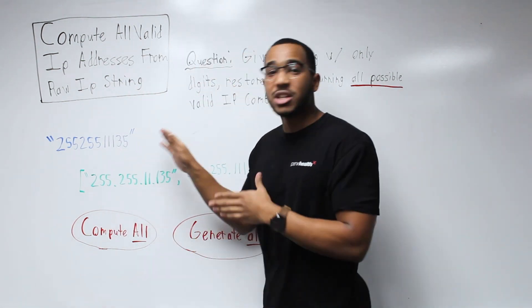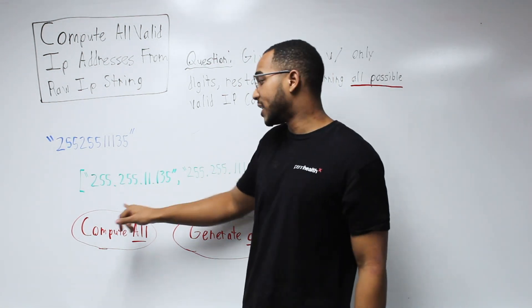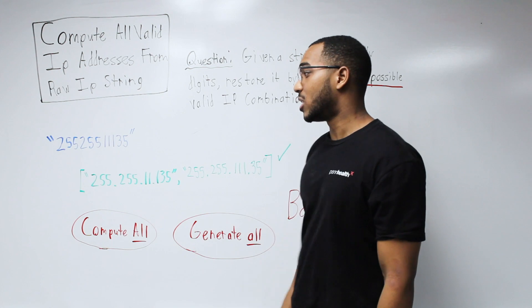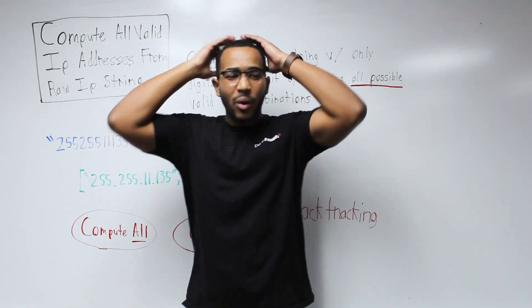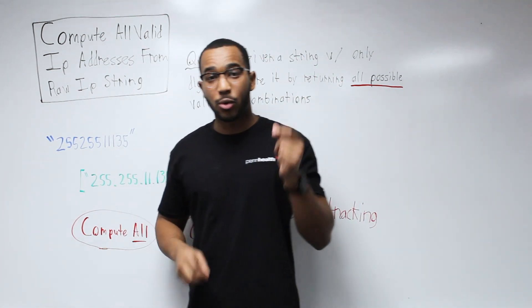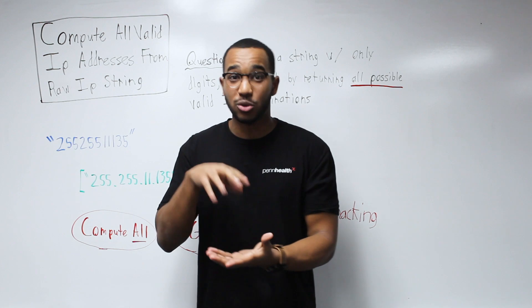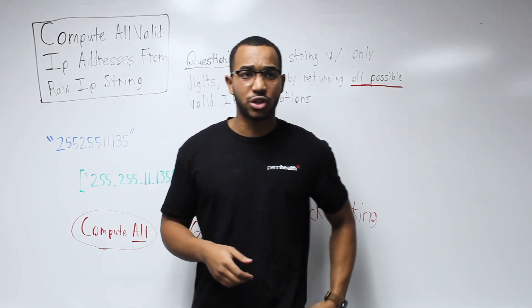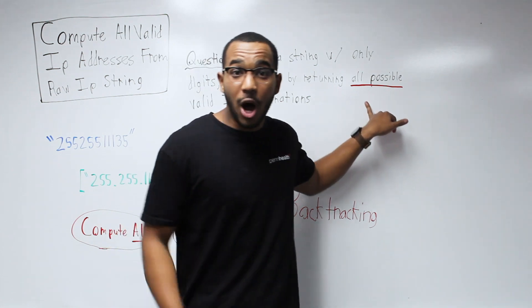Here's an example of an input and the answer. We get a raw string with only integers, place the dots, and these are both valid IP addresses — the only answers that can be generated from this string. Whenever we get a problem like this, always look for keywords. As soon as you get an interview question, identify what tools you'll use. We immediately know this involves complete search or backtracking when we see 'all possible.'